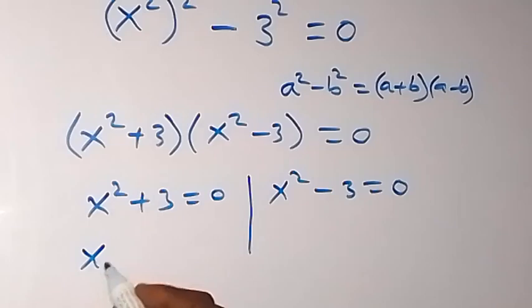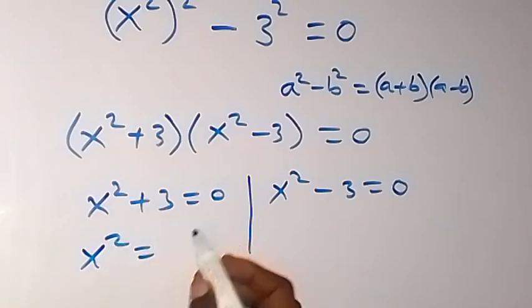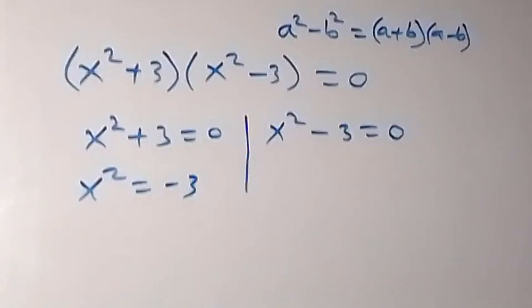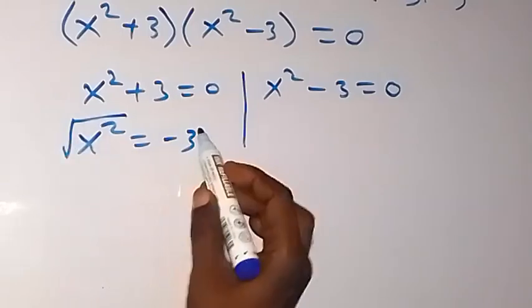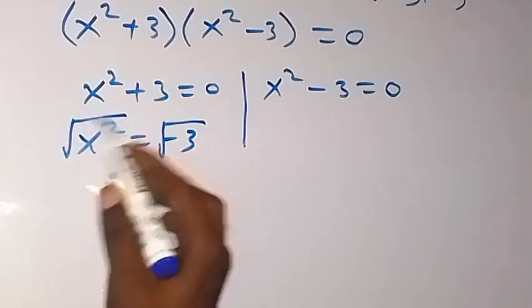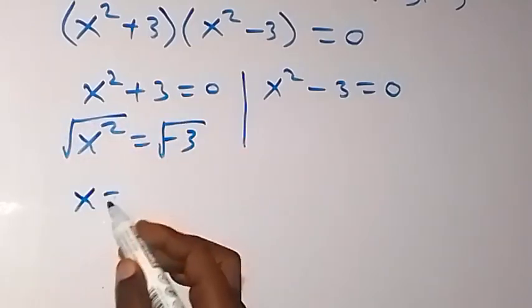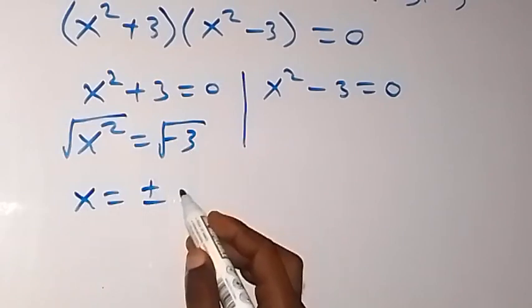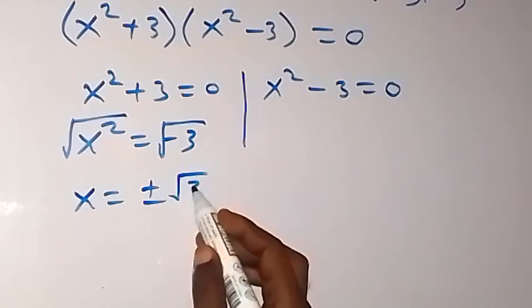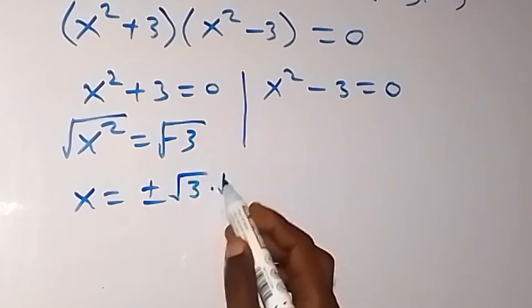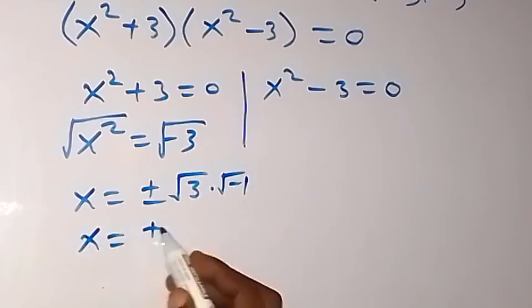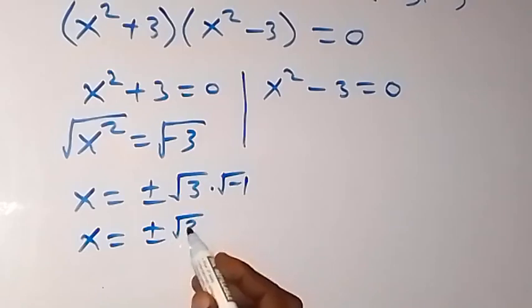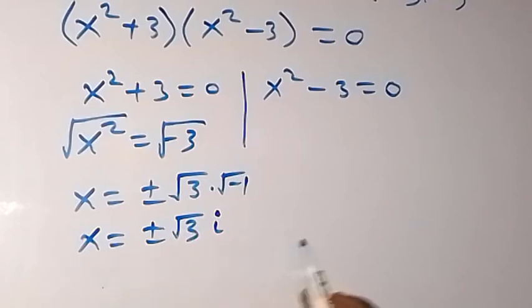And here we have x squared now equals minus 3. And to find x, we can take the square root on both sides. We have x now equals plus or minus root 3 times root minus 1, which is x equals plus or minus root 3i from here. So here we have two complex solutions.